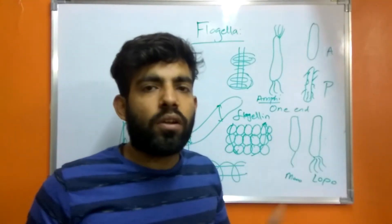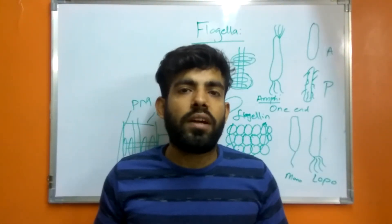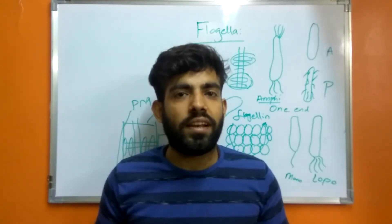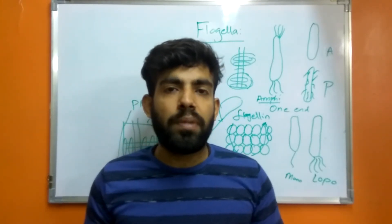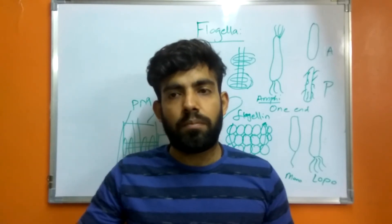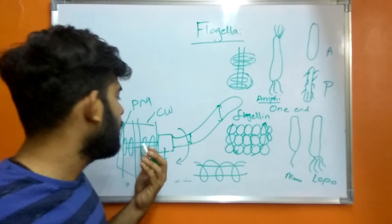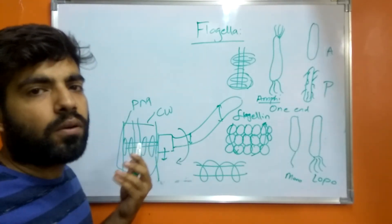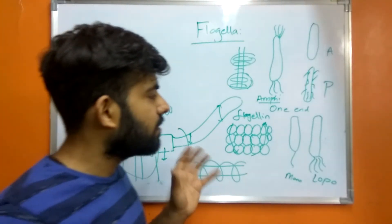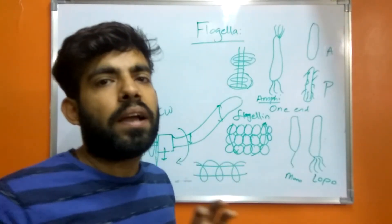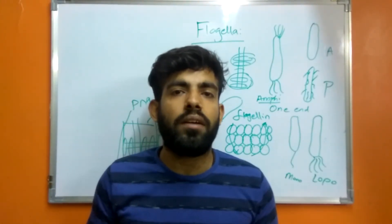The movement and rotation are directly dependent upon the continuous energy generation of the cell. Bacteria generally alter their speed and direction of mobility. Speed is altered by changing the rotation from the basal body, while direction is altered by the run and tumble activity of the bacteria.